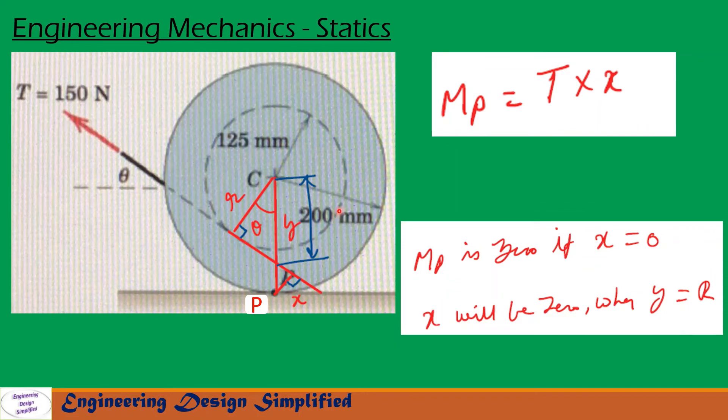Now let's see the second portion of the problem. Here we need to find moment due to T about this point P. So moment due to T about point P can be written as mp equal to T into x. From here to here, the line extended along this force and a line drawn perpendicular to this line from point P - this distance let us call x. So mp equal to T into x.